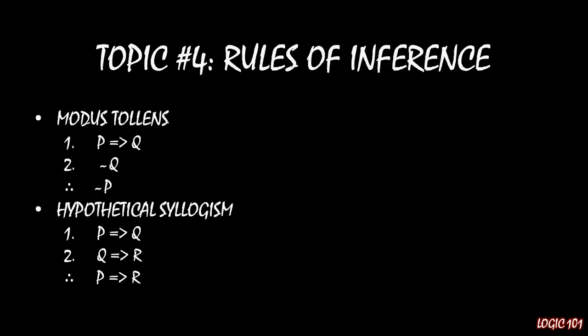And then the fourth topic is going to look at rules of inference. Rules of inference take two different premises and show that something must be true as a result of those premises. So you take two premises and you get a third thing as a result. For example, in modus tollens, if P then Q is true and not Q is true, then it follows that not P must be true as well. These are rules of inference. We'll be covering them in topic four. These are really neat and really cool.